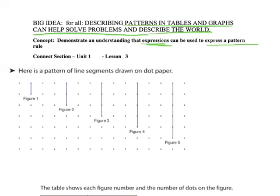The example that we're going to use to start with is a drawn pattern. As you can see here, we have figure 1, which has 2 dots in its pattern, figure 2 has 3 dots, figure 3 has 4 dots, figure 4 has 5 dots, and figure 5 has 6 dots.